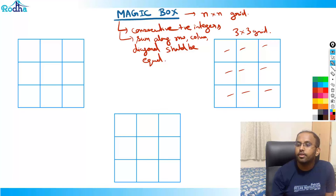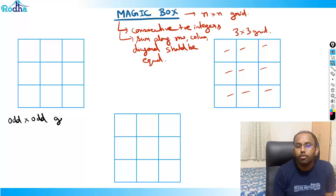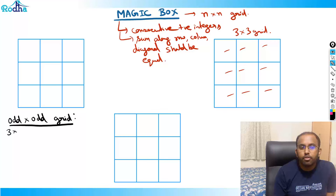We'll first look at odd cross odd grids — 3 cross 3, 5 cross 5, 7 cross 7 — because they all follow a similar pattern. In the second video we'll cover even cross even grids.